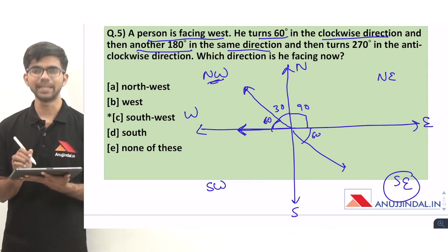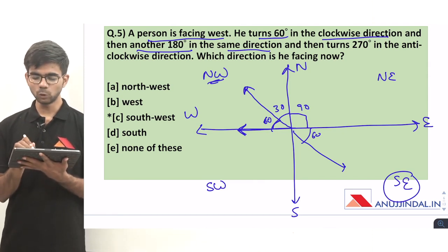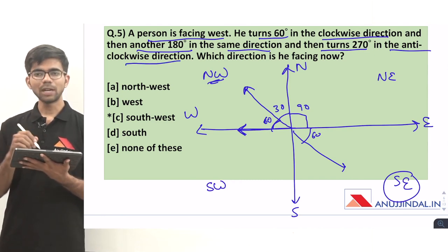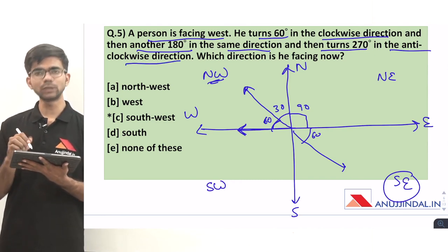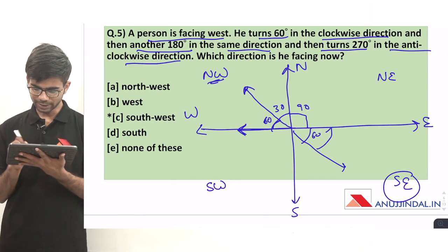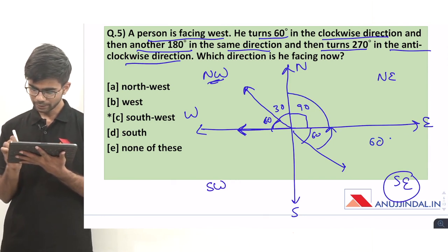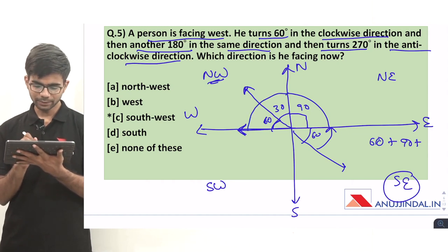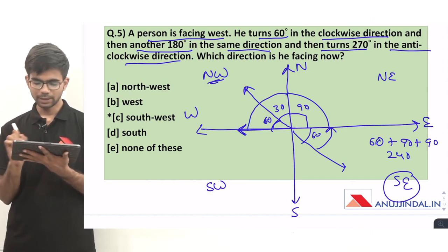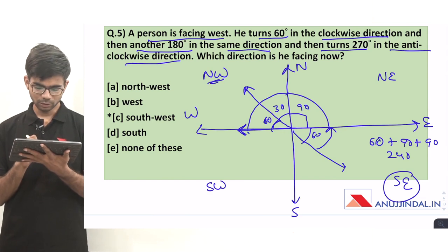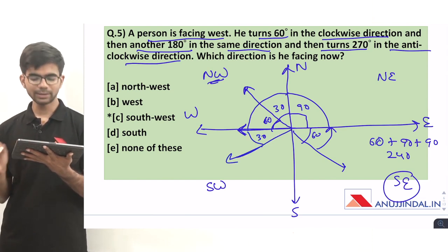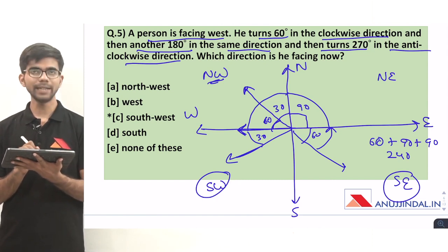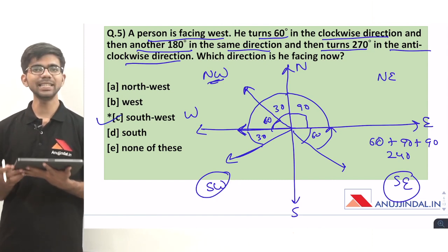The person then turns 270 degrees in the anti-clockwise direction. Going in reverse: 60, then 90 making 150, then another 90 making 240, then 30 more making 270 degrees total. The person is now facing south west direction. The correct option is option C, south west.